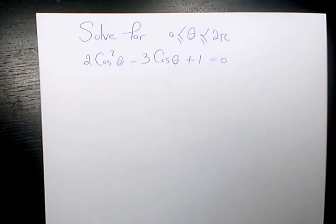What's up guys, this is Masi. Welcome to my channel. In this video I will show you how to solve this trigonometric equation: 2 cosine squared theta minus 3 cosine theta plus 1 equals 0, where theta must be between 0 and 2 pi.